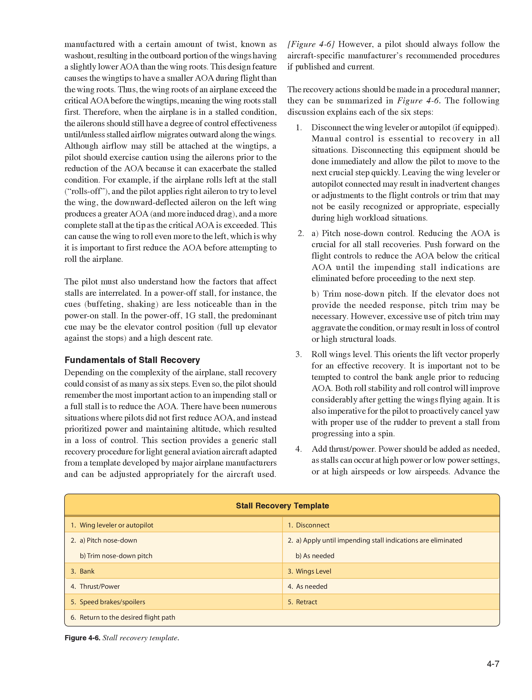Depending on the complexity of the airplane, stall recovery could consist of as many as six steps. This section provides a generic stall recovery procedure for light general aviation aircraft adapted from a template developed by major airplane manufacturers, and can be adjusted appropriately for the aircraft used. However, a pilot should always follow the aircraft's specific manufacturer's recommended procedures if published and current. The recovery actions should be made in a procedural manner, summarized in Figure 4-6.